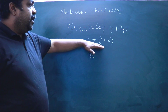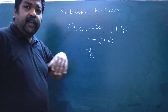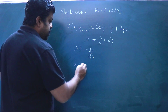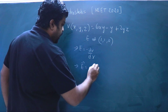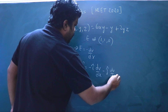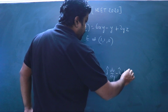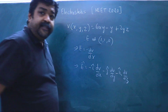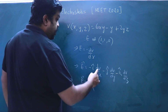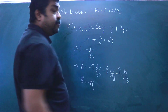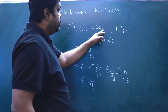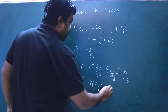The options are in vector form, so we express the electric field as: E = −(î ∂V/∂x + ĵ ∂V/∂y + k̂ ∂V/∂z). Differentiating V = 6xy − y + 2yz with respect to x: the terms without x vanish, giving ∂V/∂x = 6y.